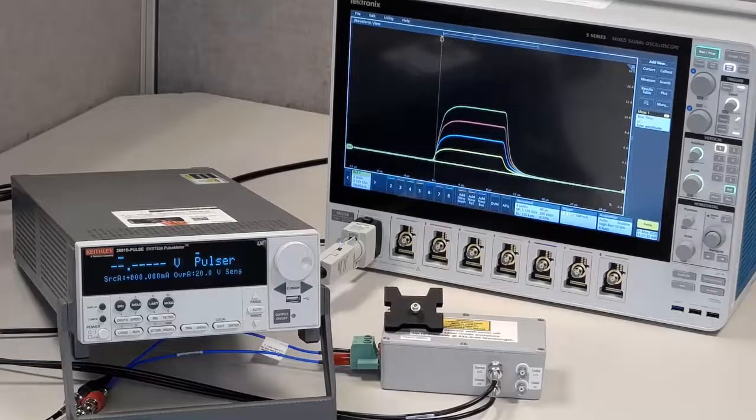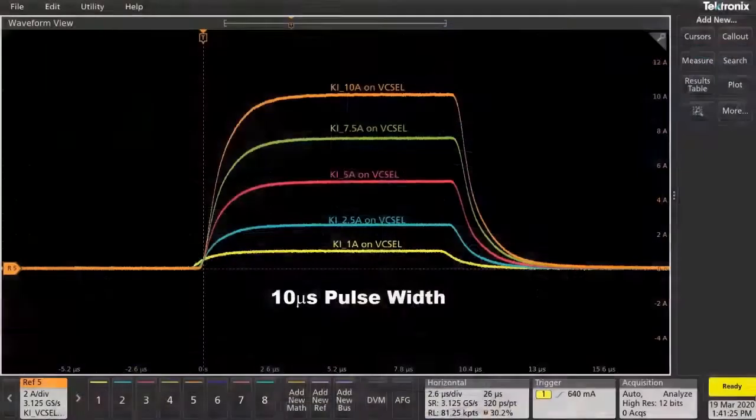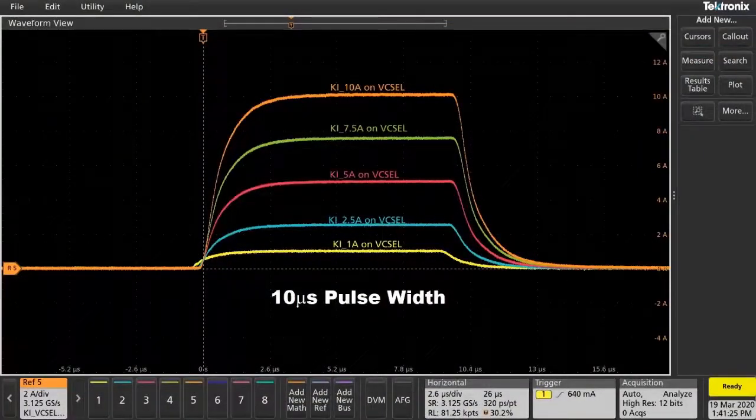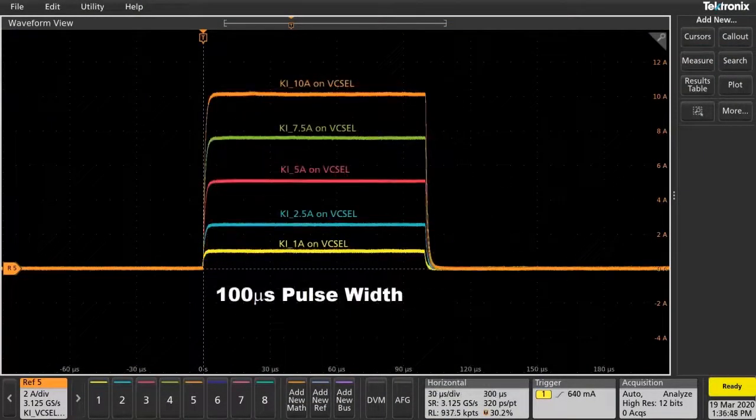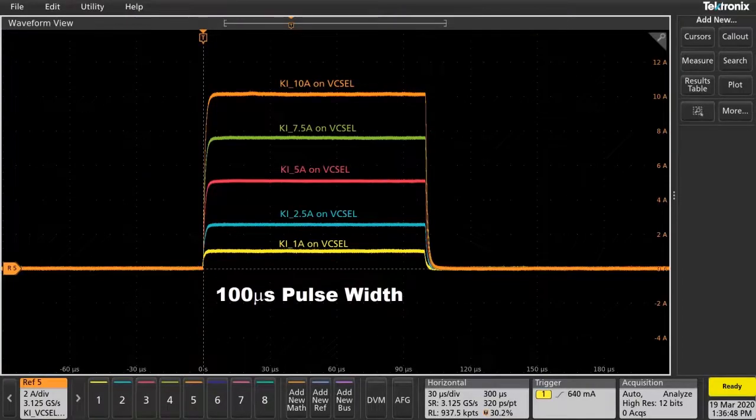The key benefit to you is the 2601B Pulse's ability to maintain fast rise times no matter the pulse width and amplitude, ensuring high-quality current pulse sourcing and measurement performance.